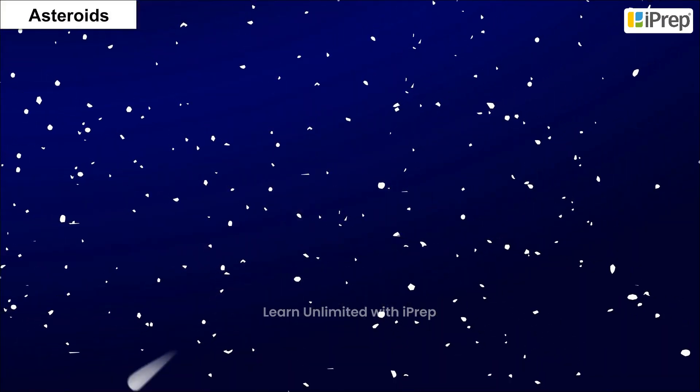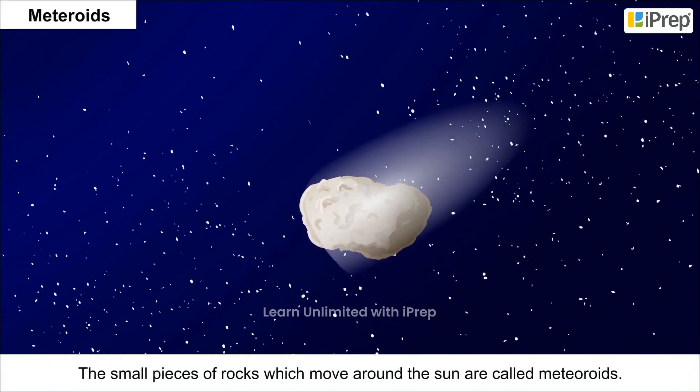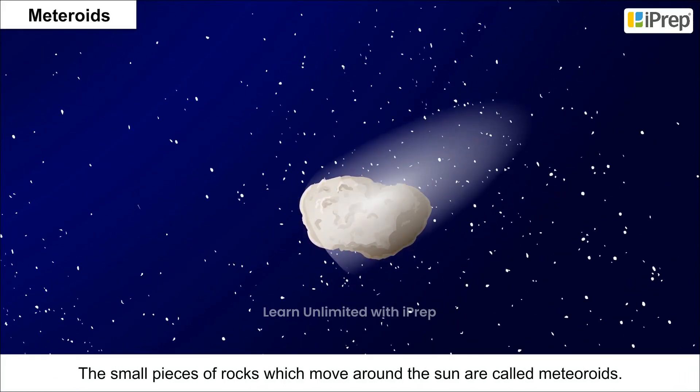Asteroids are found between the orbits of Mars and Jupiter. The small pieces of rock which move around the Sun are called meteoroids.